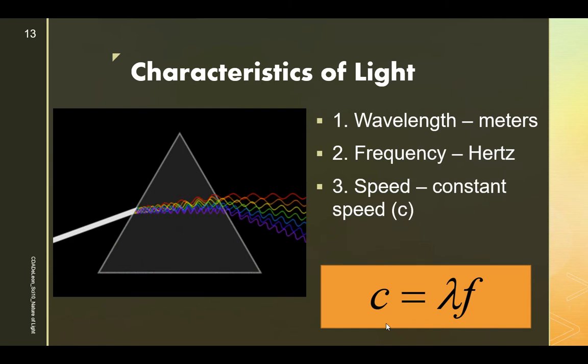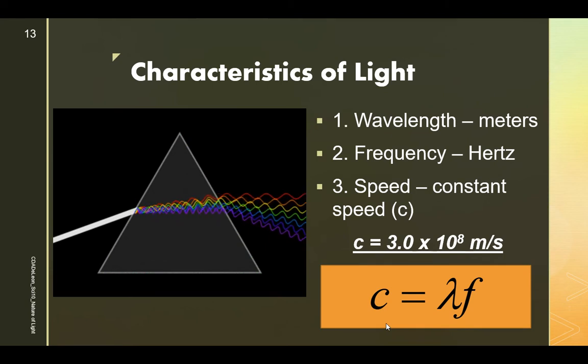Now, in this formula, it's wavelength times frequency. Wavelength is measured in meters and frequency is measured in hertz. To get the speed of light, that is the formula. The speed of light is 3.0 times 10 raised to 8 meters per second.